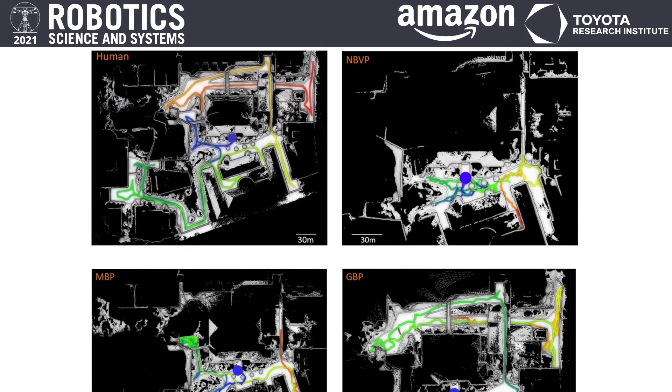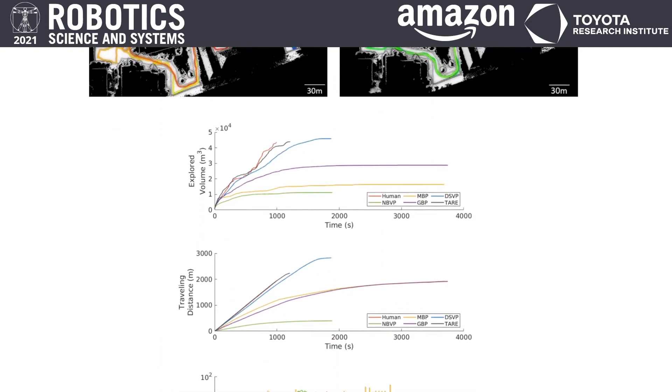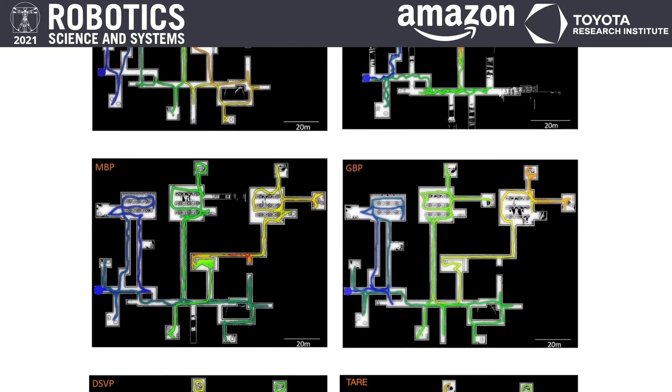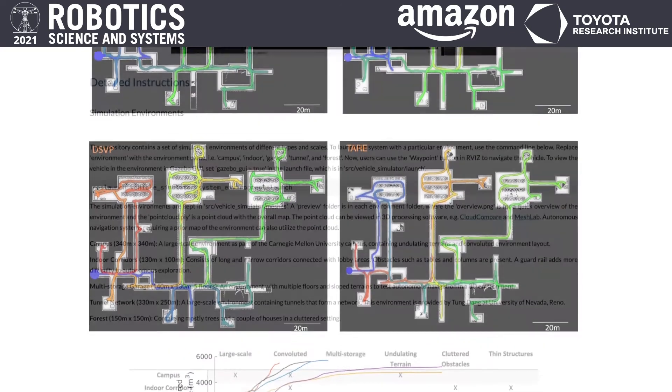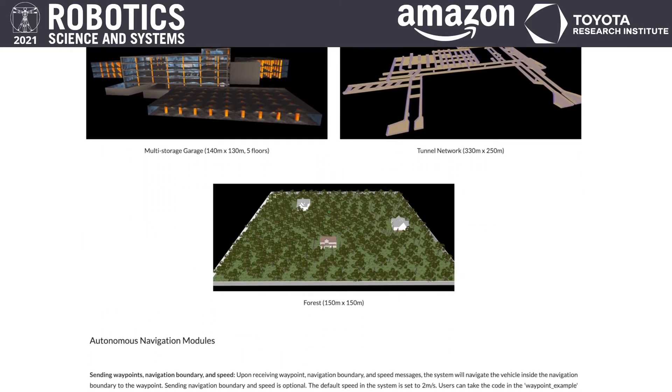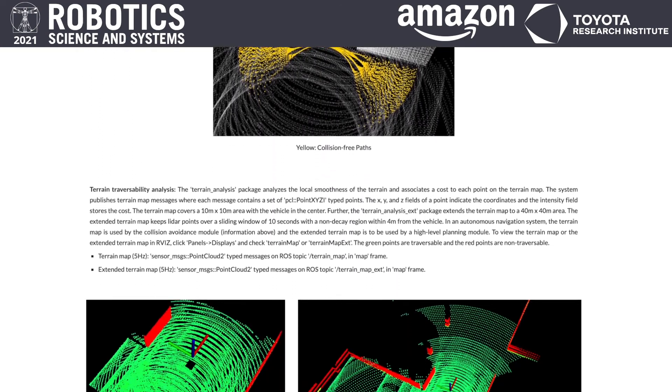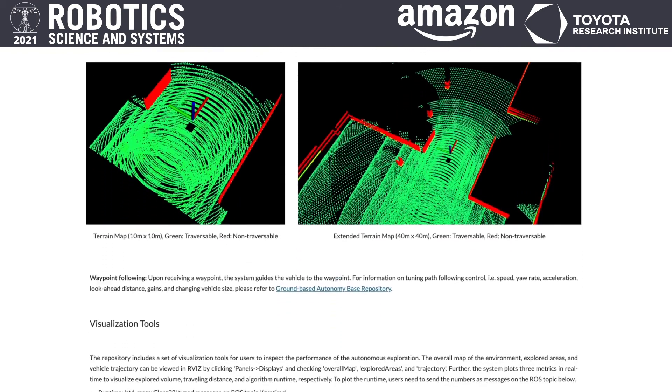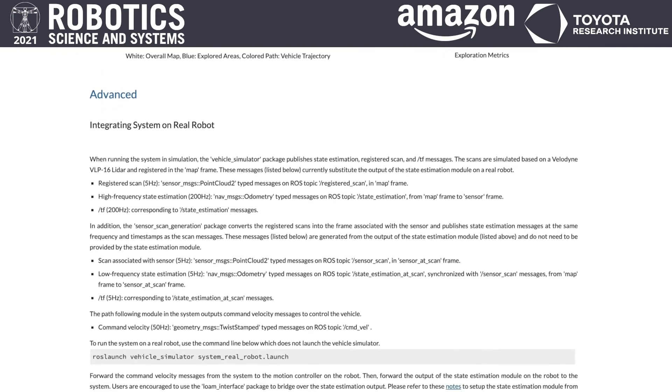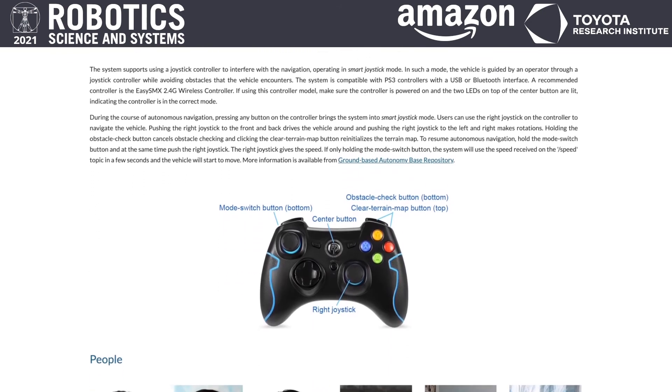Our software code is publicly available. In addition to open-sourcing the exploration planner, we have released what we call the Autonomous Exploration Development Environment. There are multiple representative simulation environments, basic navigation modules such as collision avoidance, terrain traversability analysis, path following, and a set of visualization tools. This environment is meant to be a platform for benchmarking and also for real-robot system integration.